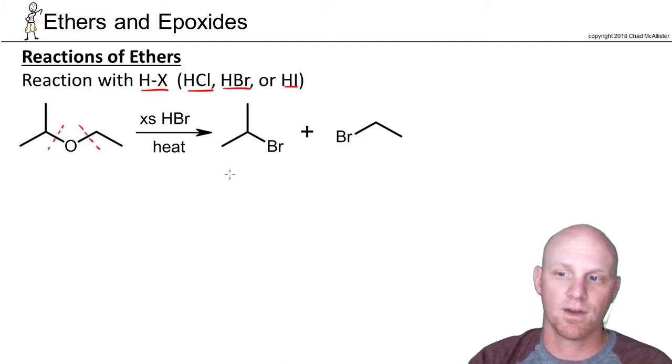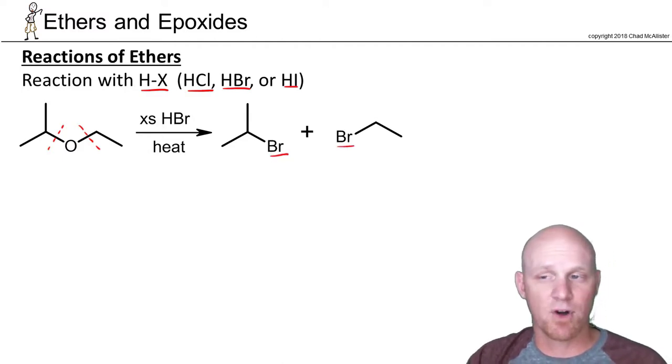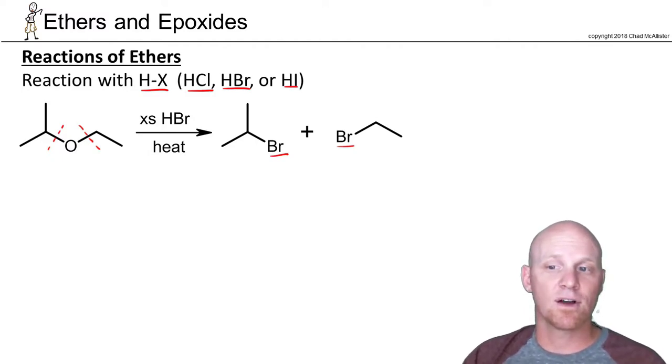and the net result is we're going to break both carbon-oxygen bonds and replace the bond to oxygen with the corresponding halogen. With HBr that's bromines. With HI that'd be iodines. With HCl that'd be chlorines. And the idea is that it'll do both as long as you add excess of the hydrohalic acid.